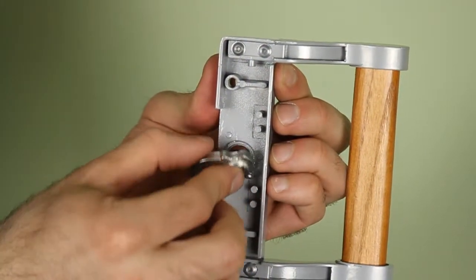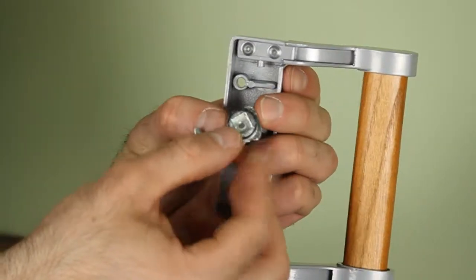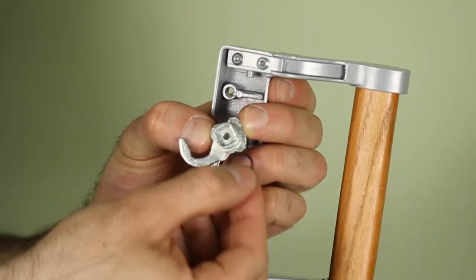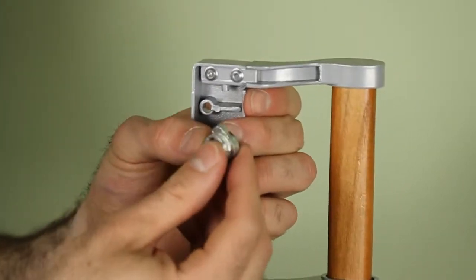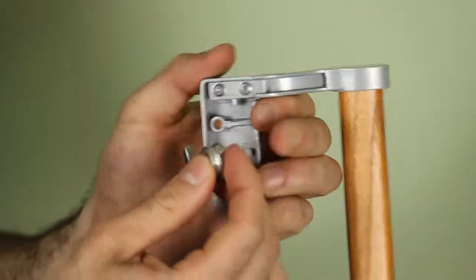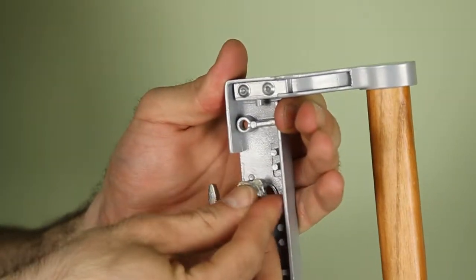Now on the other side we're going to flip the locking mechanism and a small washer. Put this on the back side. Place it back in place.